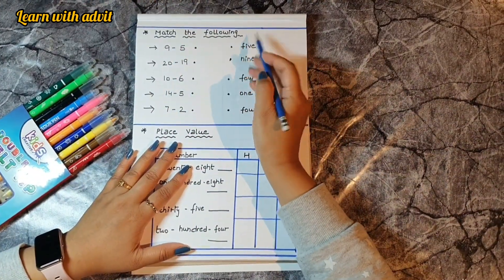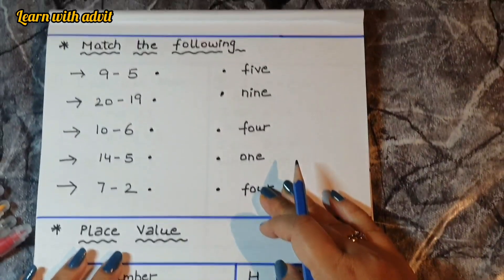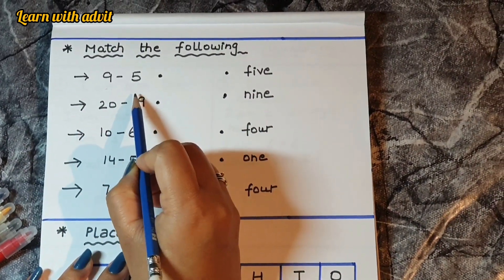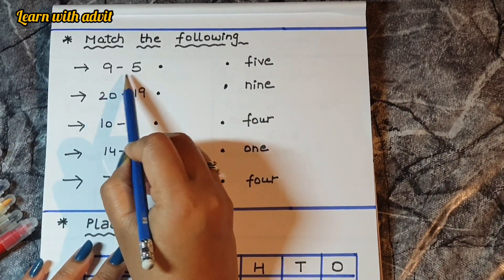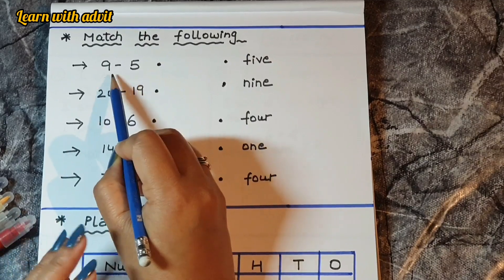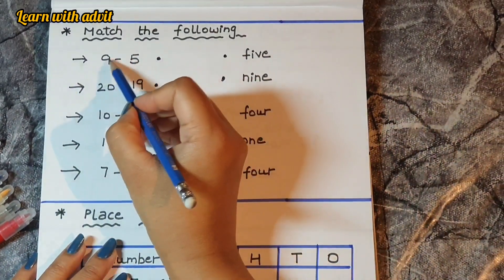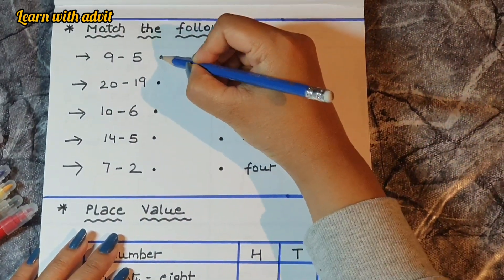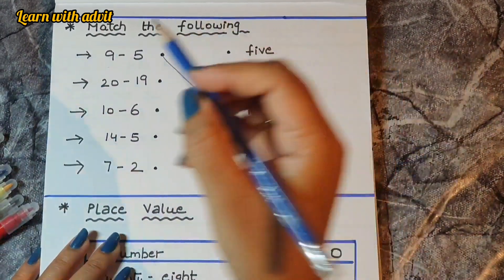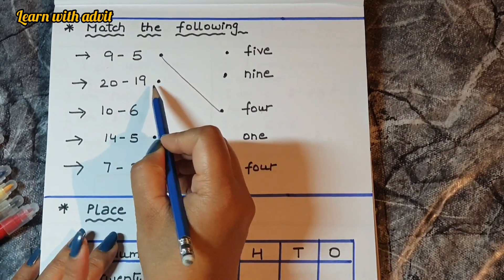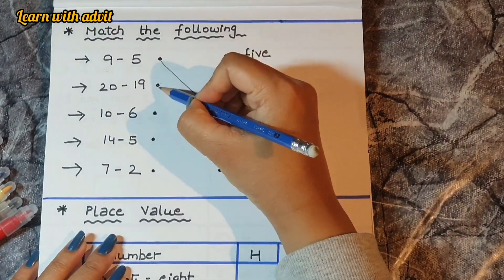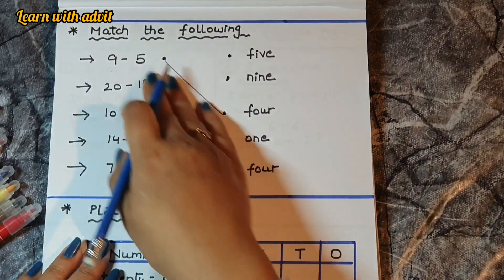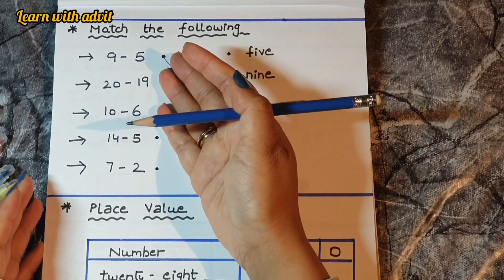Next is match the following. I have given number names and maths equations. Kids need to solve each equation and match the answer to the number name. For example, 9 minus 5 is 4 — find the word 'four' and match it. 20 minus 19 is 1 — find and match. You can also give this with multiplication or addition.